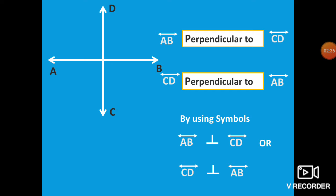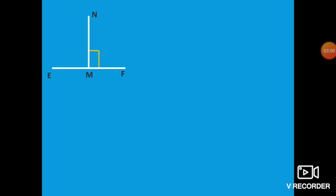By using a symbol: perpendicular is written using the symbol that is the inverse of capital letter T. So we write Line AB perpendicular to Line CD, or Line CD perpendicular to Line AB. Remember this symbol for perpendicular. Here you can see Line segment EF and Line segment MN. They form a right angle, so these are perpendicular lines. Line segment EF is perpendicular to Line segment MN.